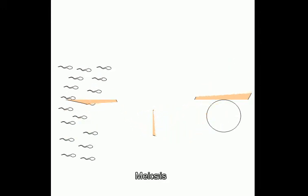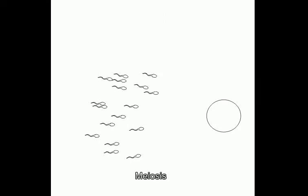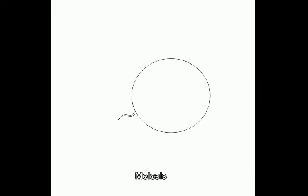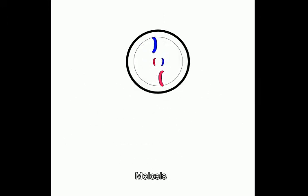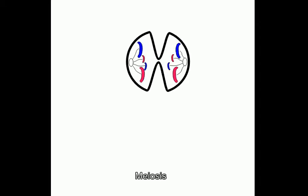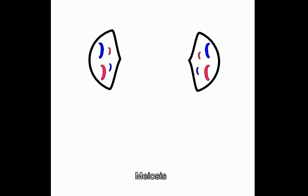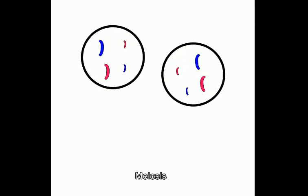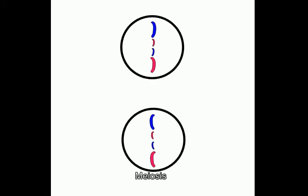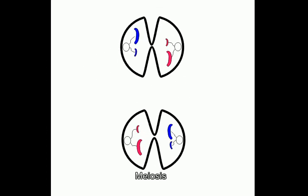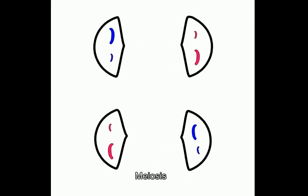Meiosis is the reproduction of sex cells. The cell membrane dissolves and the chromosomes duplicate themselves. The cell then splits into two daughter cells, which contain the same amount of chromosomes as the parent cell. The two daughter cells then split into four cells, which contain half the chromosomes of the parent cell.